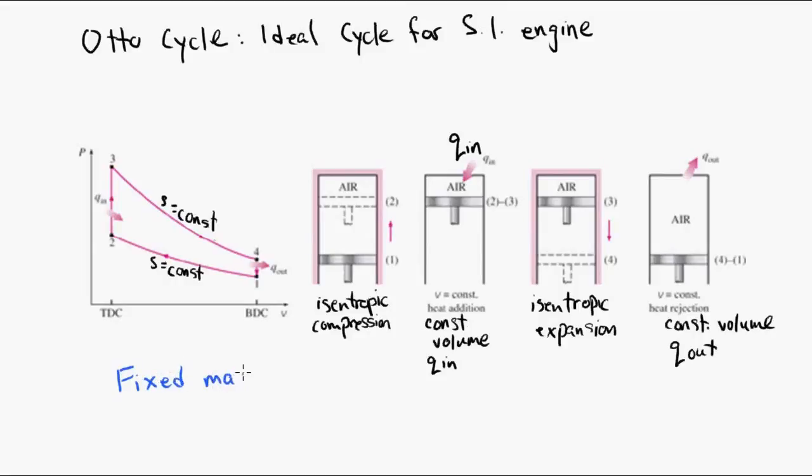So in the cycle, or sorry, in the cylinder, the mass of air inside is fixed for the Otto cycle. There's no air going in, there's no going out. It's a fixed mass, therefore we use a control mass, not a control volume. So we call this a closed system. It's not a steady flow system, it's a closed system.